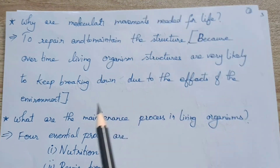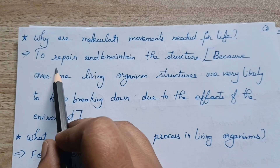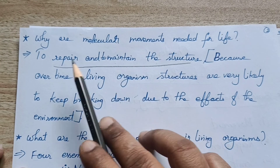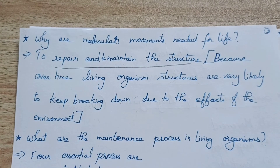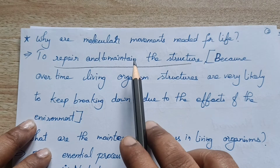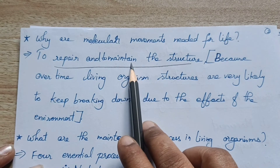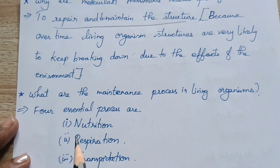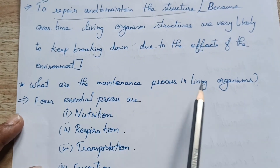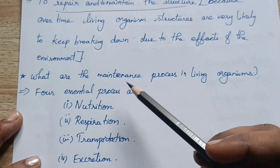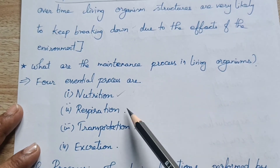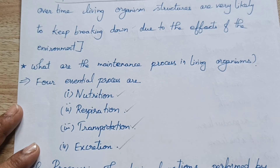What is maintenance? We mentioned that molecular movements are needed to repair and maintain the structure. For example, if you got hurt, it automatically heals. The four essential maintenance processes in a living organism are: nutrition, respiration, transportation, and excretion.